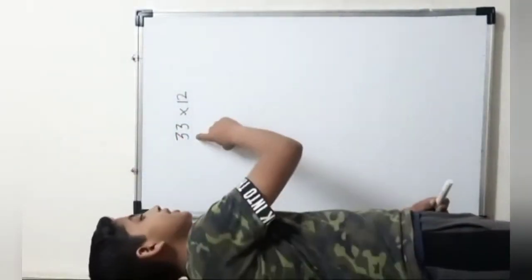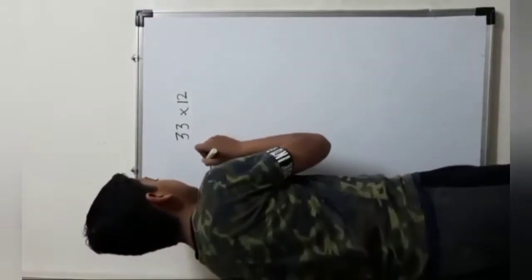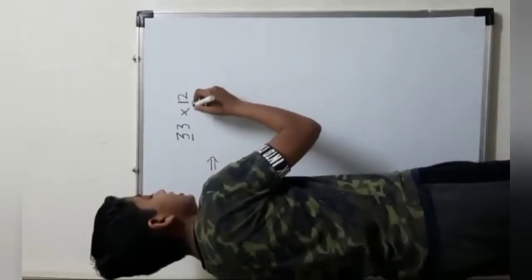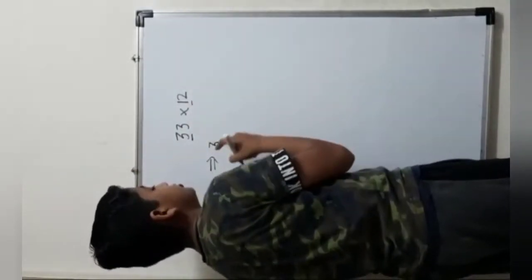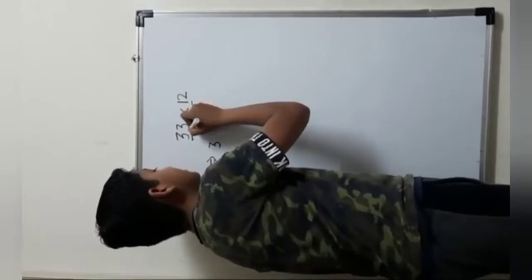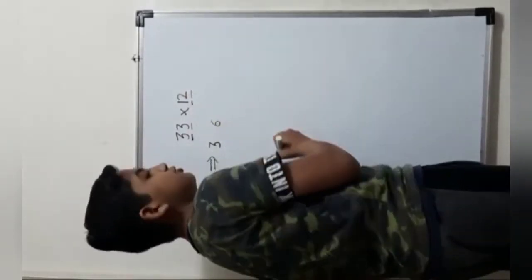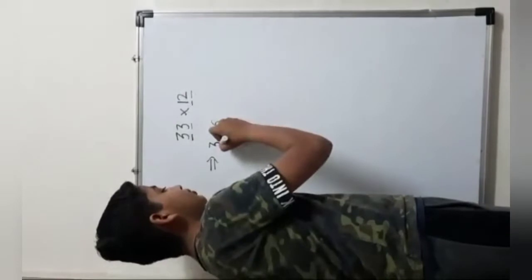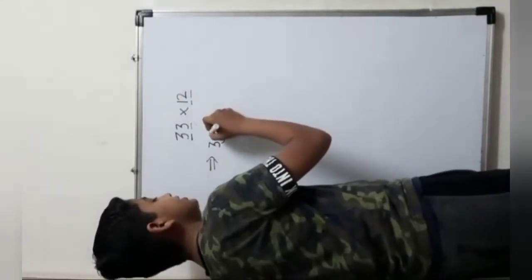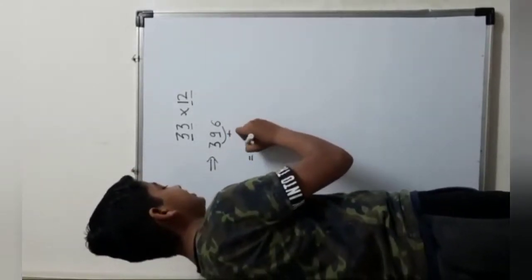So, we have problem here, 33 into 12. So, we have to do first that, we have to multiply 10's place number with 10's place number. So, 3 into 1 is 3. So, we will write here 3. Now, we have to multiply the 1's place number with 1's place number. So, this is 3 into 2 is 6. So, now, we have to add both the products we get from these operations. So, 3 plus 6 is 9. We will write 9 between them. So, the final answer is 396.